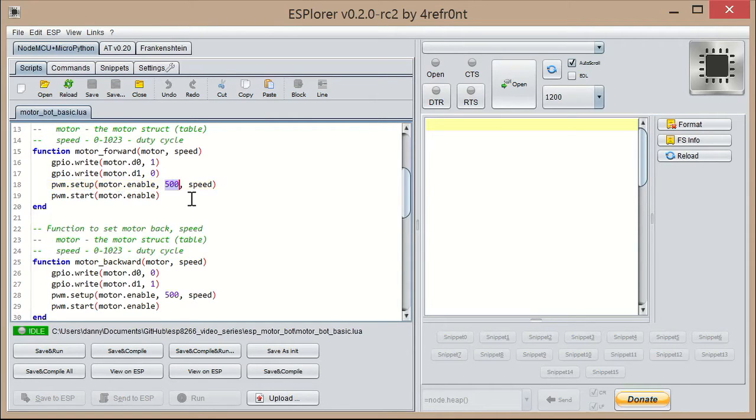So we're setting it up again with this clock cycle, a clock speed of 500, which is how fast the cycles are being made. This speed here, which is from zero to 1,023 sets the duty cycle. So the higher this number, the faster your motors will go. If you go too low, you may find they're just going click, click, click and not moving at all. And then start to actually start PWM.